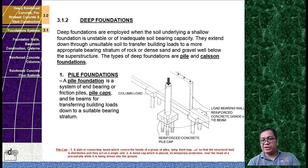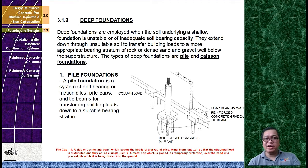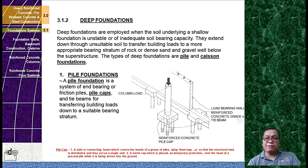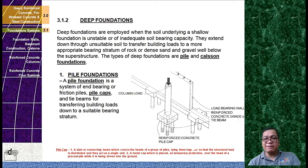Now let's discuss about deep foundations. Deep foundations are employed when the soil underlying a shallow foundation is unstable or of inadequate bearing capacity. They extend down through unstable soil to transfer building loads to a more appropriate bearing stratum of rock or dense sand and gravel well below the superstructure. The types of deep foundations are pile and caisson foundations.